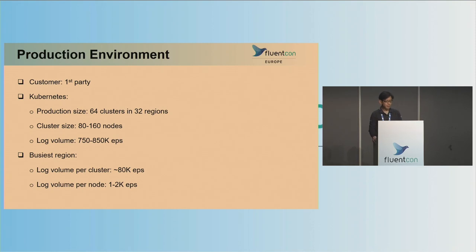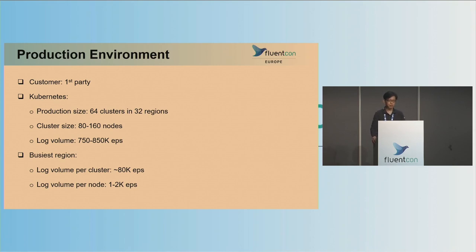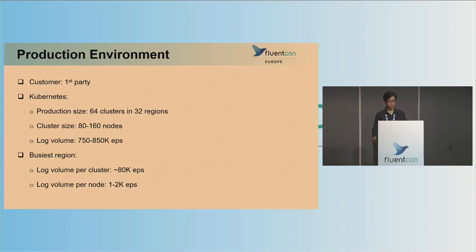This is our production environment, the current state of it. Some interesting numbers: the overall log volume is somewhere between 750 to 850k per second. In our BCS region, the log volume per cluster is about 80k per second, and the log volume per node varies between 1 to 2k per second.